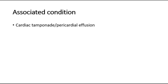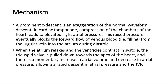The prominent X-descent is associated with cardiac tamponade and pericardial effusion. A prominent X-descent is an exaggeration of the normal waveform descent. In cardiac tamponade, compression of the chambers of the heart leads to elevated right atrial pressure. This raised pressure eventually blocks the forward flow of venous blood from the jugular vein into the atrium during diastole. When the atrium relaxes and the ventricles contract in systole, the tricuspid valve is pulled down towards the apex of the heart, and there is a momentary increase in atrial volume and decrease in atrial pressure, allowing a rapid descent in atrial pressure and the JVP.